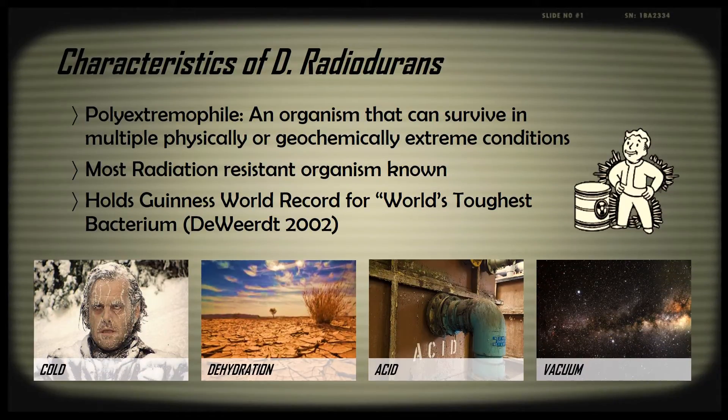Some characteristics of D. radiodurans include that it is a polyextremophile. This means that it is an organism that can survive in multiple physically or geochemically extreme conditions. In the case of D. radiodurans, this includes extreme temperatures of hot and cold, dehydration, acidic conditions, and vacuum.